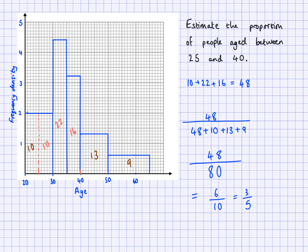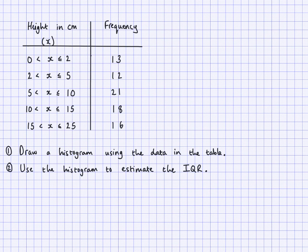I mentioned before that I removed the table of values because we could also use the table to do this, but I wanted to show you how you would do it if you were just given a histogram. So here are some questions for you to try. We have some information in a table — height in centimetres X and frequency. What you need to do is draw a histogram using the data in this table, then use the histogram to estimate the IQR — the interquartile range. Make sure you use the histogram to find an estimate of the interquartile range.